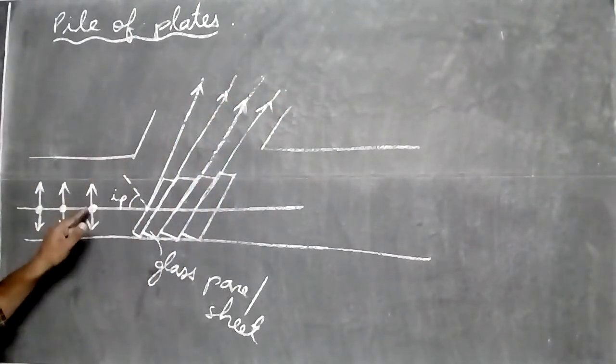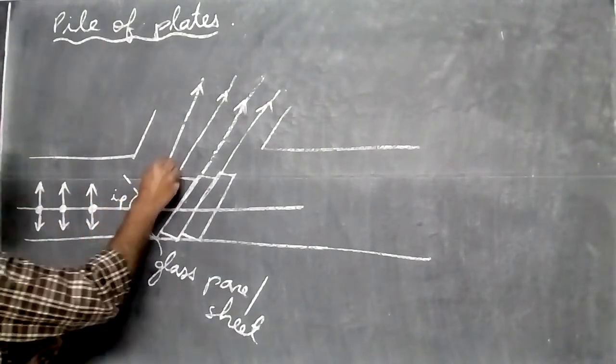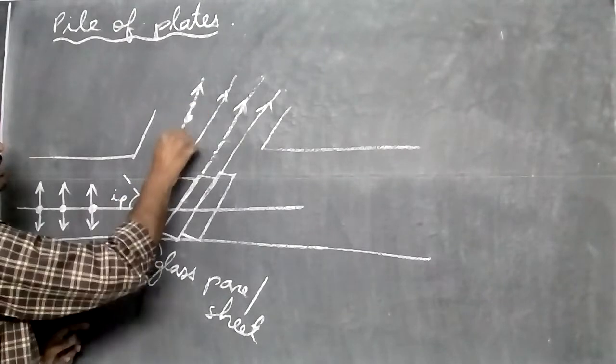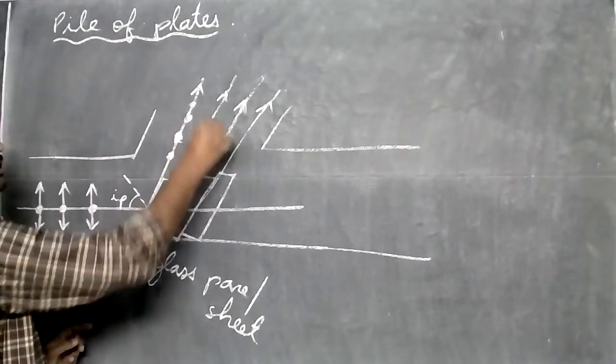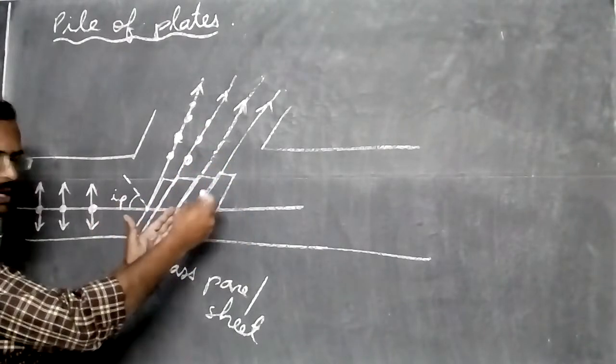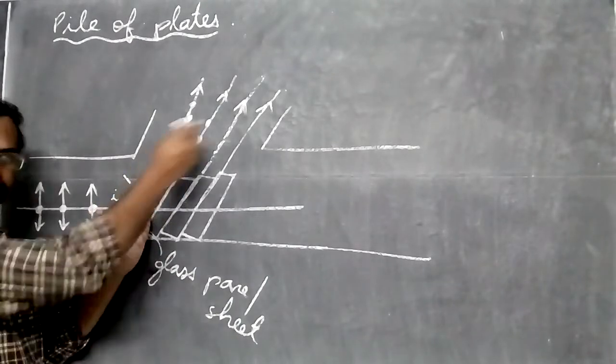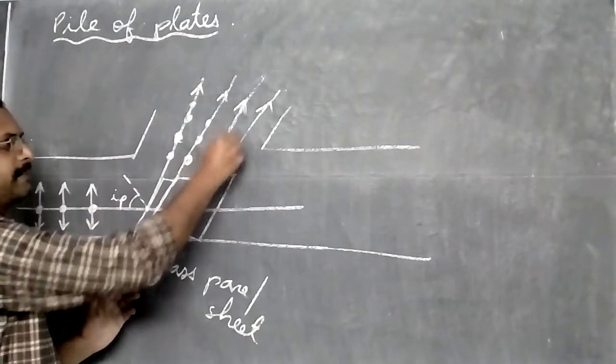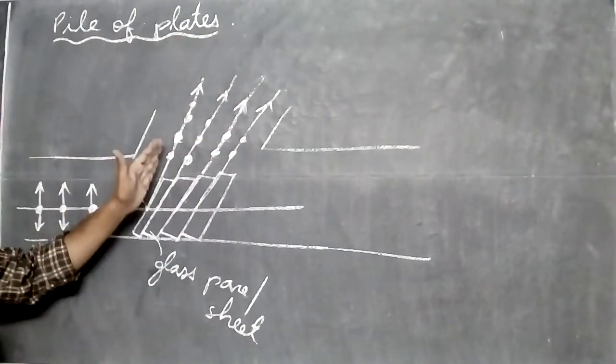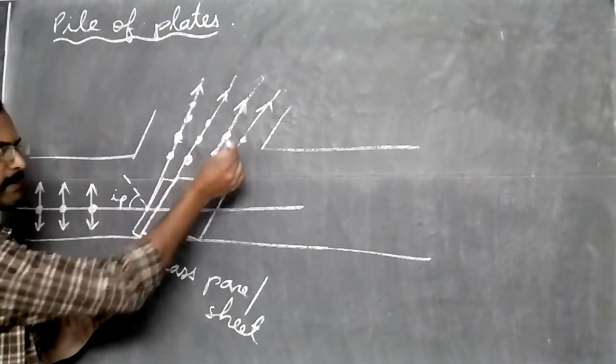The light which vibrates out of the board, those light rays will be going upward, reflected at each pane. As the light goes through the glass pane, whatever light ray which is not reflected will also be reflected at the next pane. All the light rays vibrating out of the board will be reflected.